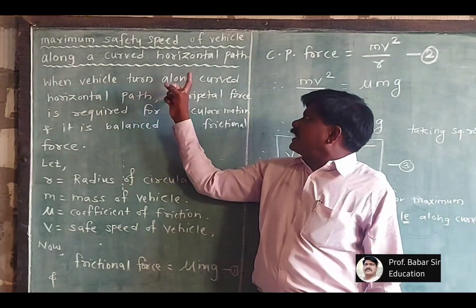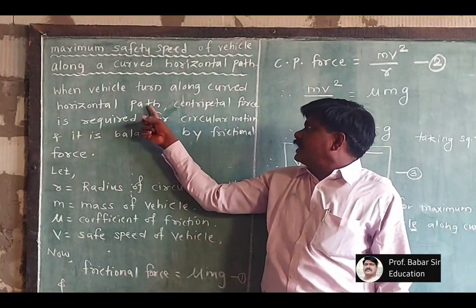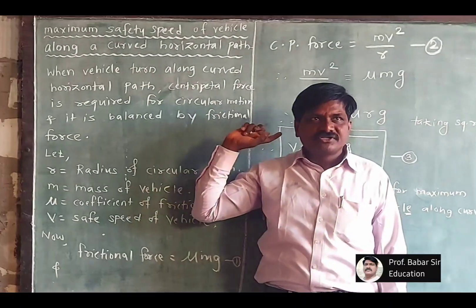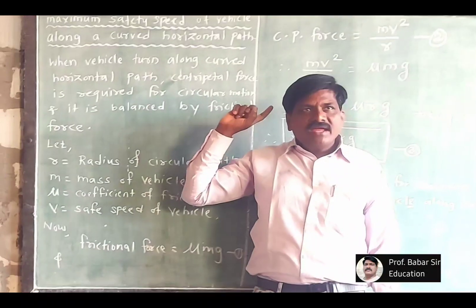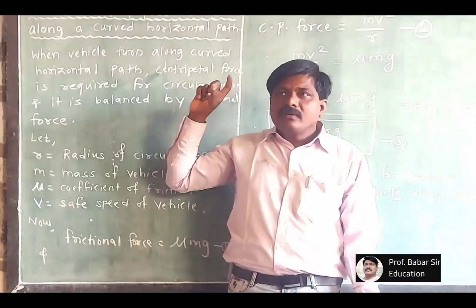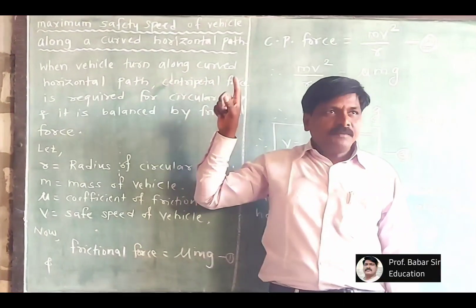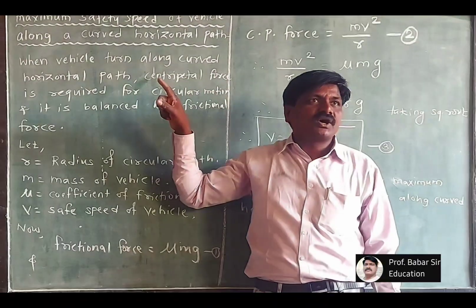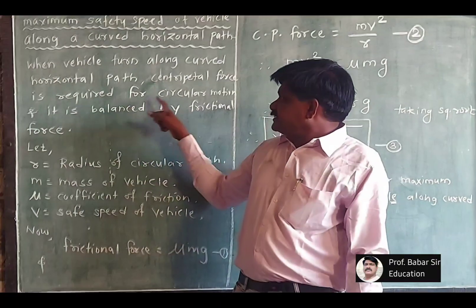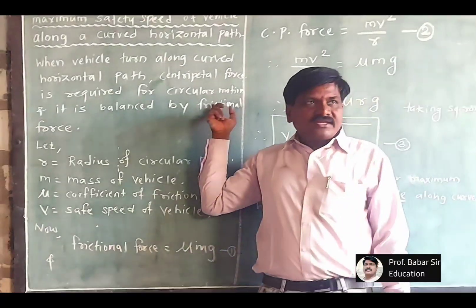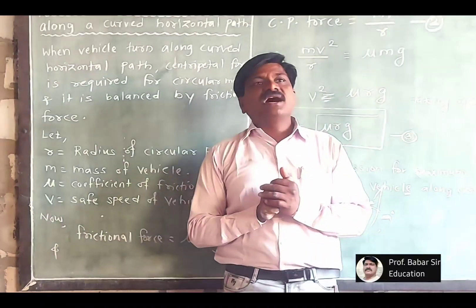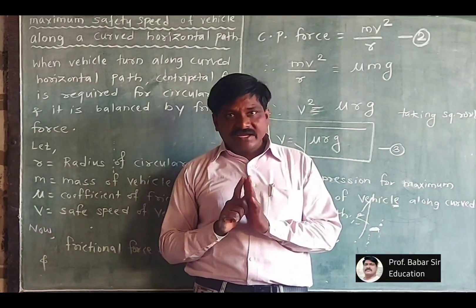When the vehicle is turned along the curved horizontal path, centripetal force is required for circular motion. When the vehicle is turned along the horizontal path, the centripetal force required is provided by friction between the surface of the road and the vehicle.